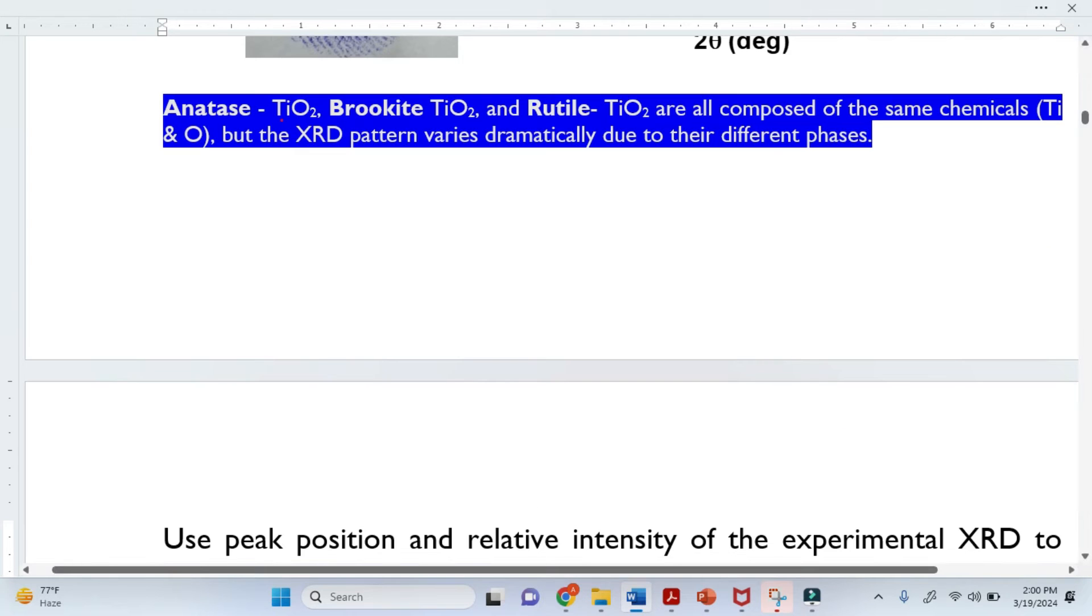We know that Titania exists in three phases: Anatase, Brookite, and Rutile. If you look here, all these three phases have the same chemical composition. They are made from Titanium and Oxygen only. But they all have very different XRD patterns because of different phases.